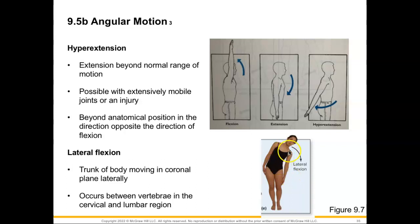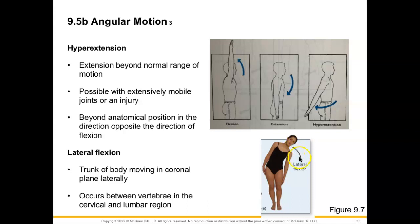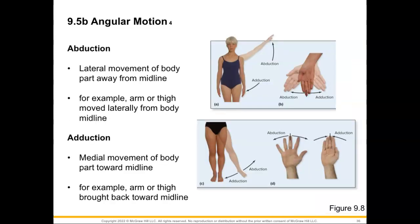Lateral flexion really only occurs within the trunk, moving in our coronal plane — which divides our body into anterior and posterior sides. We simply lean over to one side. Leaning left is lateral flexion to the left; bending the other direction would be lateral flexion to the right. This occurs within the vertebrae of our cervical and lumbar regions.